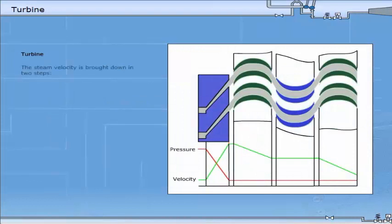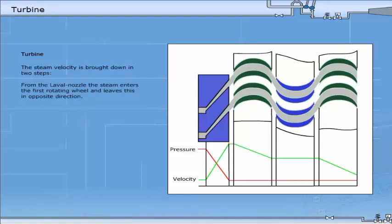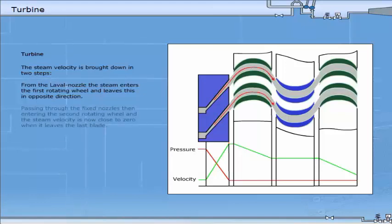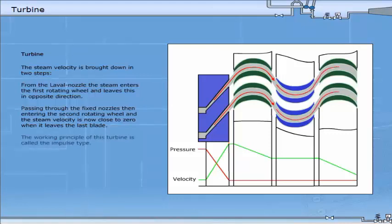The steam velocity is brought down in two steps. From the Laval nozzle, the steam enters the first rotating wheel and leaves this in the opposite direction, passing through the fixed nozzles, then entering the second rotating wheel and the steam velocity is now close to zero when it leaves the last blade.